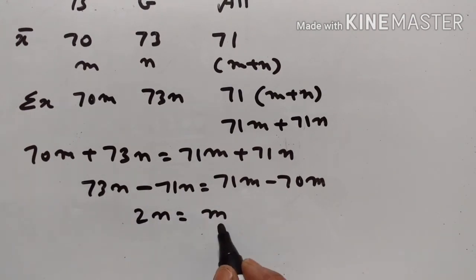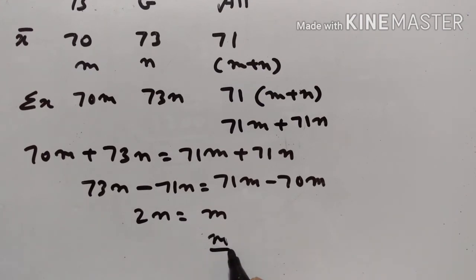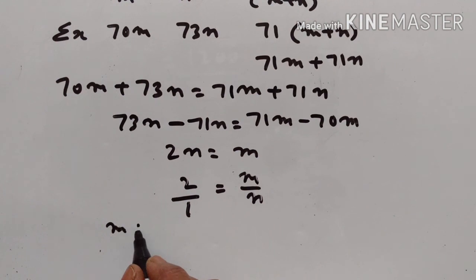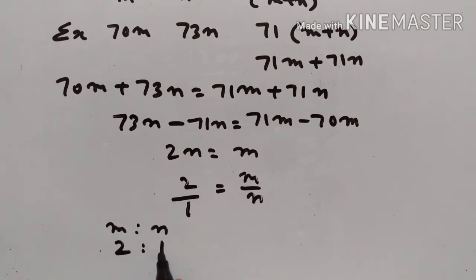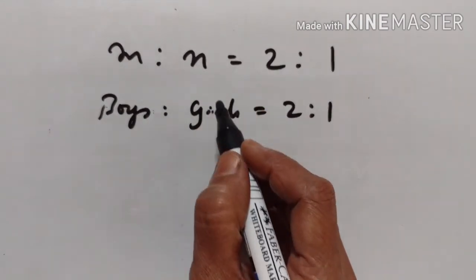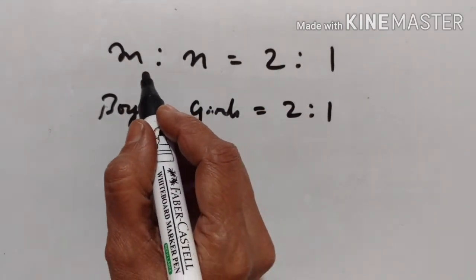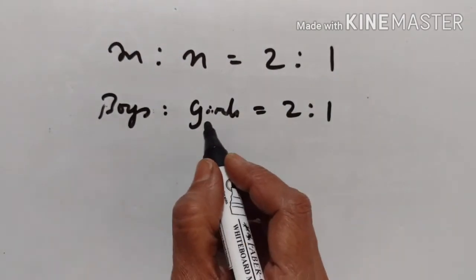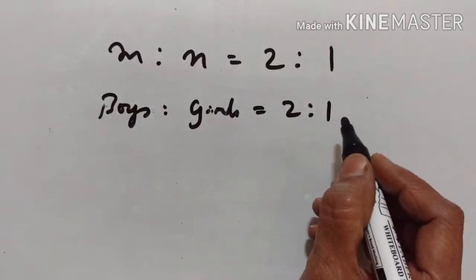Rearranging: 73n minus 71n equals 71m minus 70m, so 2n equals m. m is the number of boys and n is the number of girls. Therefore m upon n equals 2 upon 1, meaning the number of boys to number of girls is 2 to 1.